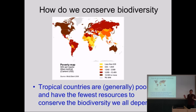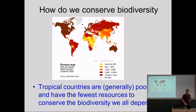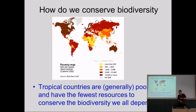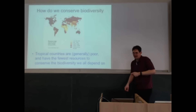We have this issue: most biodiversity is in the tropics, most threatened biodiversity is in the tropics, and lots of countries don't have a massive amount of money. In many cases, the ecosystem services we depend on — such as carbon for global climate regulation — affect us all. It doesn't matter where you grow forests to suck up carbon; the important thing is that it's happening somewhere.